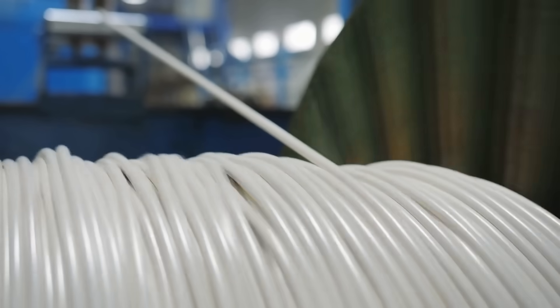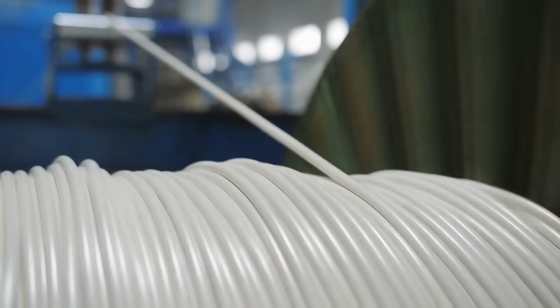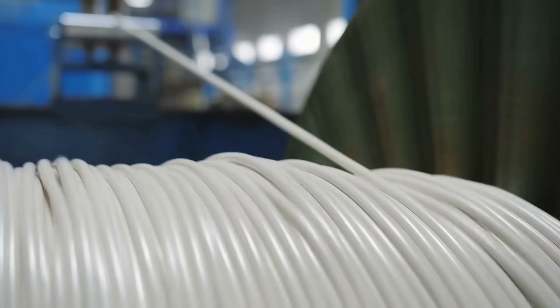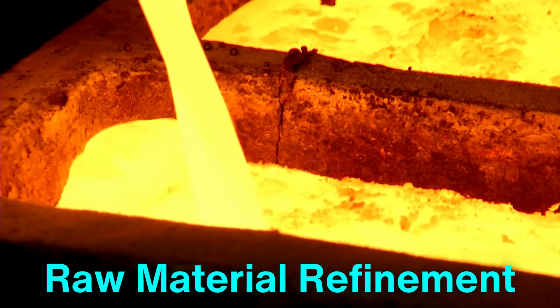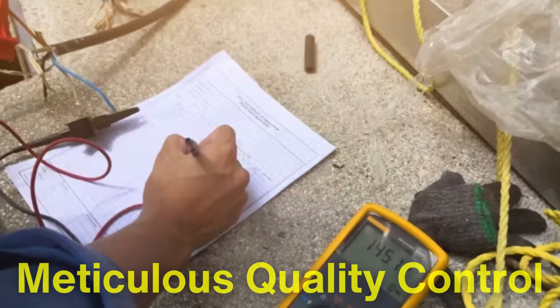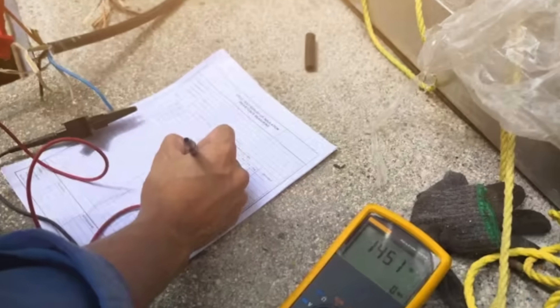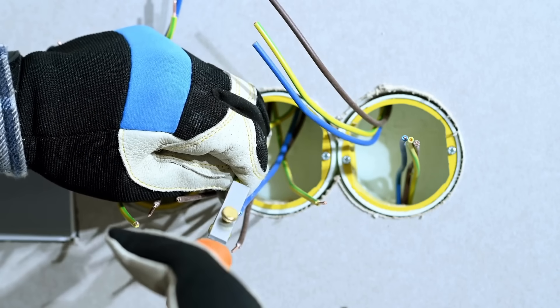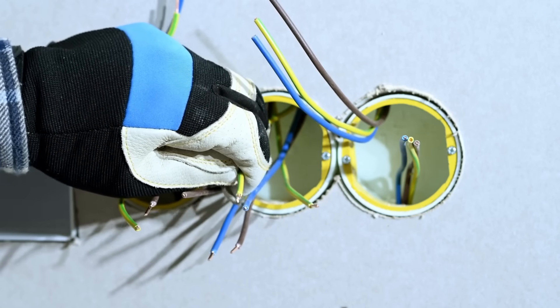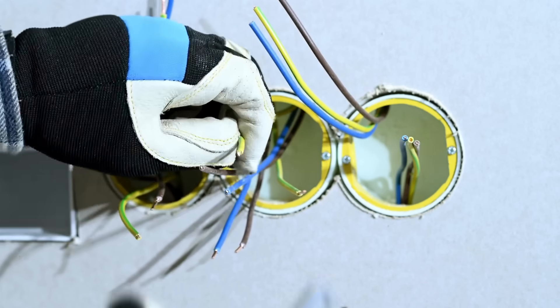The production of insulated wires is far more complex than it might seem at first glance. It's a process that combines raw material refinement, precision engineering, and meticulous quality control to produce a product we often take for granted. These wires are the lifelines of modern civilization, ensuring that electricity and information flow seamlessly through our interconnected world.